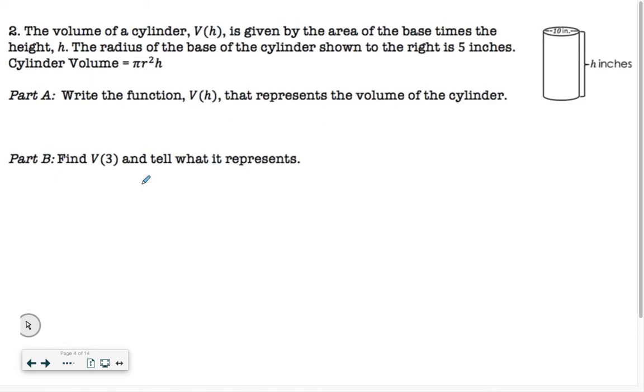Alright, number two, the volume of a cylinder V of H is given by the area of the base times the height H. The radius of the base of the cylinder shown to the right is 5 inches. Cylinder volume equals pi R squared H. So pi R squared H is actually the formula to calculate the volume of any cylinder. So over here, we've got the radius being halfway across. Well, I know all the way across is 10, and so halfway across would be 5. And our height, we do not know that number. So we just use the letter H.